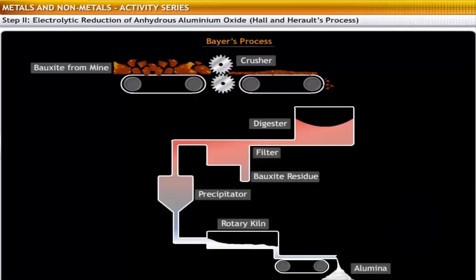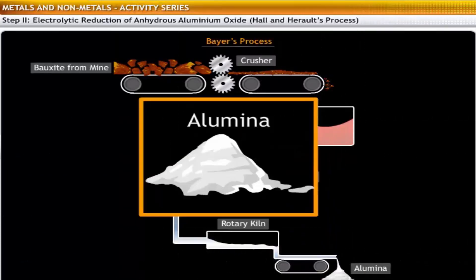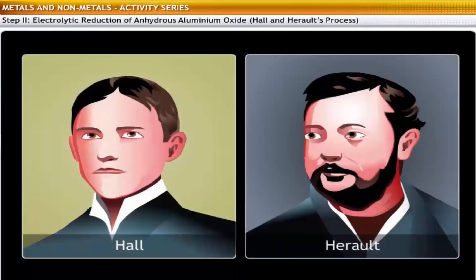The second step in the extraction of aluminium is the electrolytic reduction of alumina obtained using Bayer's process. This is done through Hall and Herold's process, which was developed independently by Hall and Herold.